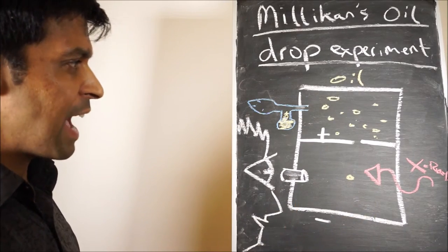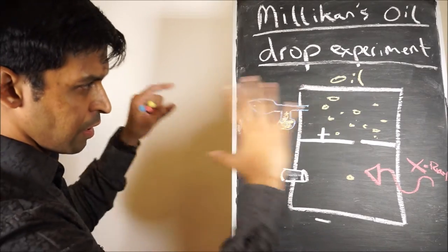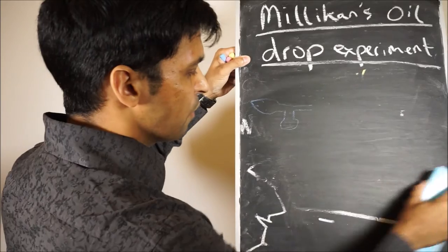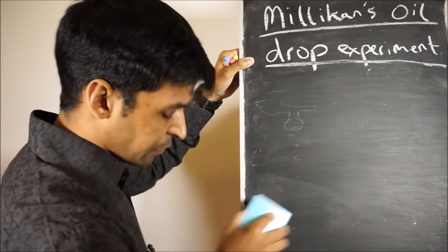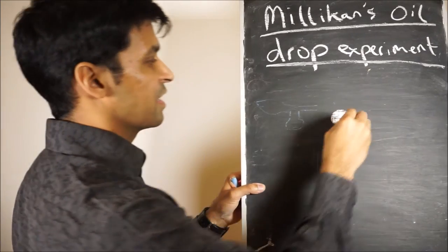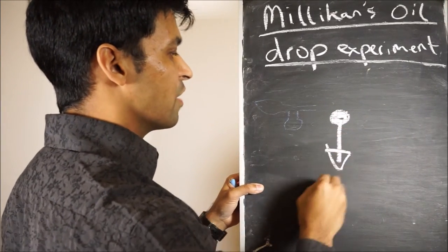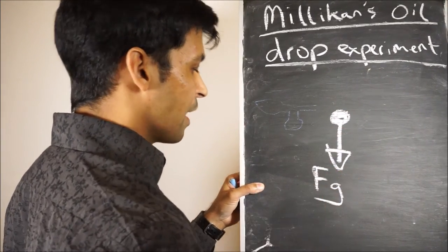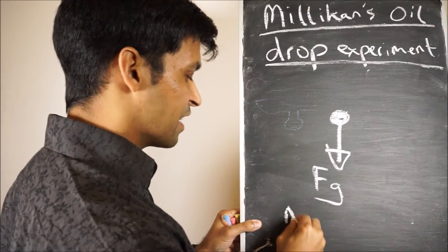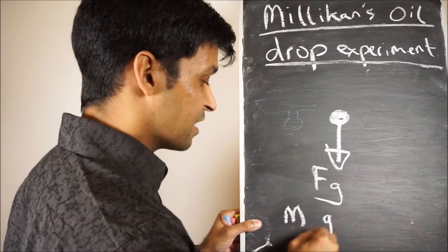And if you have a look at a free body diagram, so if I get rid of all of this, if you have a look at the free body diagram, we see, so that's your drop of oil. Down here you've got Fg. Fg is a force due to gravity, and this is calculated by mass times gravity.